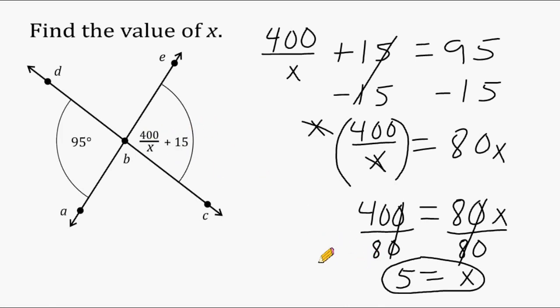So let's check our answer by substituting this variable x with 5 to make sure that 400 divided by 5 plus 15 is equal to 95. So we're going to take 400 and divide that by 5. And after we get that, we're going to add 15 to that and see if it makes 95. So 400 divided by 5 is equal to 80, and 80 plus 15 is, in fact, 95 degrees, thus confirming our answer that x is equal to 5.